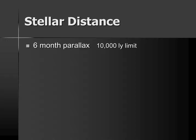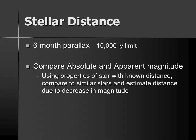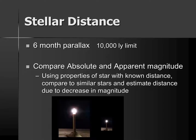So how do we tell the distance to more distant objects? Here's where it gets a little tricky. We compare the absolute and apparent magnitude. Using the properties of a star of a known distance, we compare them to similar stars and estimate the distance depending on how much dimmer the star appears. If I know that both of these are 25-watt light bulbs, I can measure the distance to the dimmer one by measuring the decrease in apparent magnitude.